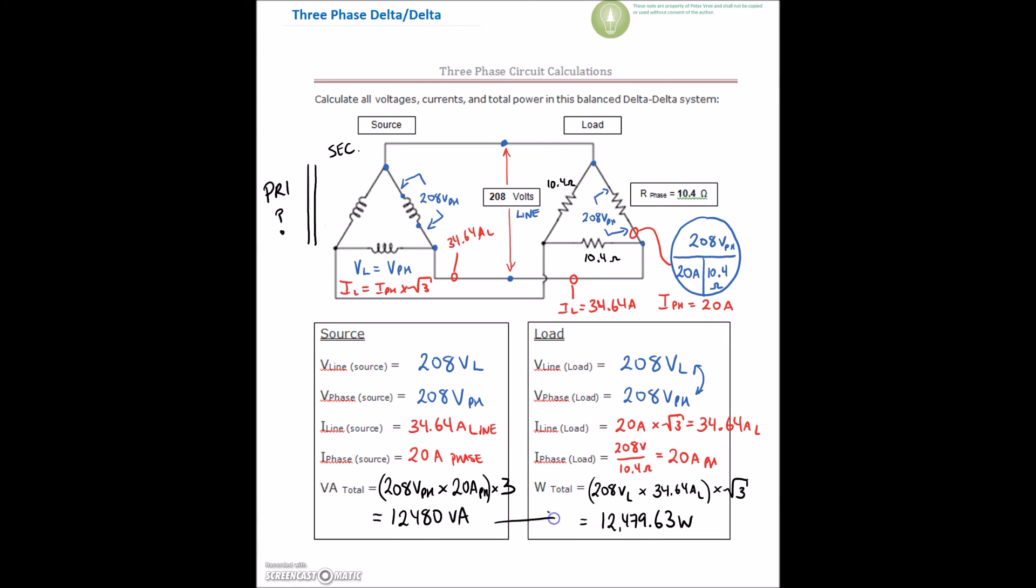Again, don't worry about that small difference that's there. So we've got 12,480 VA. We've got 12,479.63. They're exactly the same number, guys. Don't worry about those numbers. So you can see that they're a mirror image of each other.